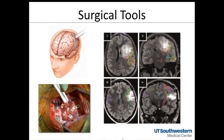Surgical mapping is important for gliomas and will be covered in more depth in a future lecture. At this institution, we perform awake mapping, asleep mapping, bipolar stimulation mapping, monopolar stimulation mapping, cortical mapping, and subcortical mapping. The nuances of monopolar versus bipolar stimulation, subcortical versus cortical approaches, and assessing proximity to fiber tracts are important topics.